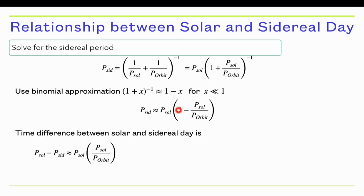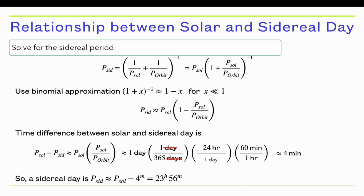If we move the solar period over to the other side of the equation, solar period minus sidereal period is approximately solar period squared over the orbital period. The solar period is exactly 1 day. The solar period divided by the orbital period is 1 day over 365 days. Now we're going to convert this day into minutes: 24 hours in one day, 60 minutes in one hour, and that gives us 4 minutes. In other words, a sidereal day is about 4 minutes shy of a full solar 24 hour day. That's where we see that we reproduce that 23 hour, 56 minute result.